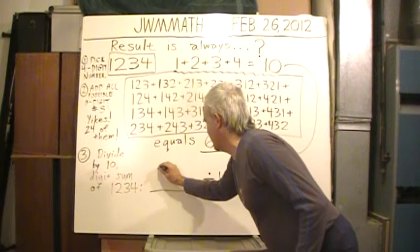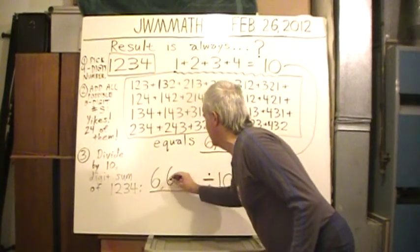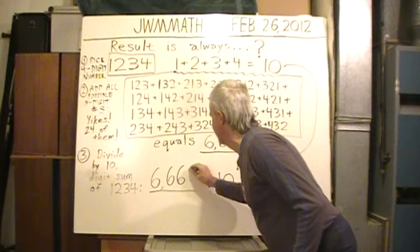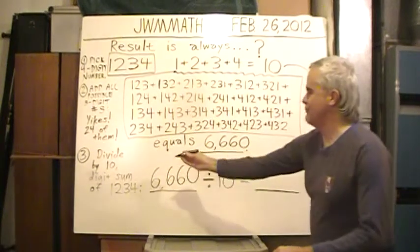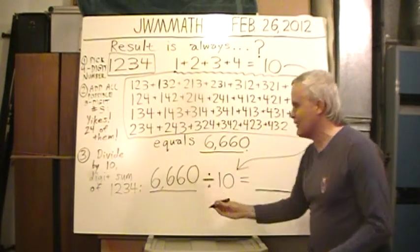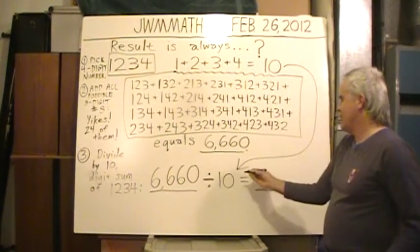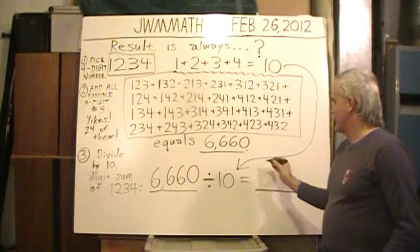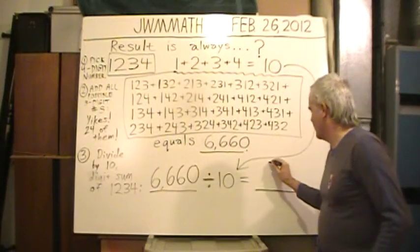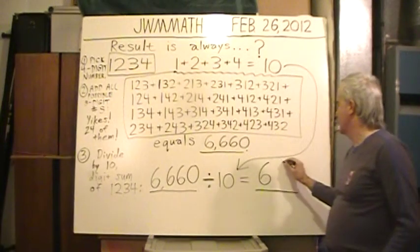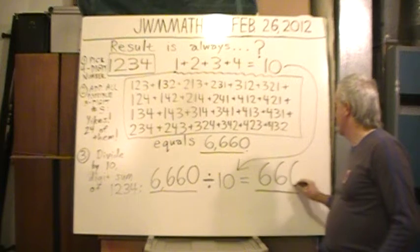So I'm going to take that 6,660 and place it down here for the last step. Divide by 10, that digit sum of that original 1,234. Easy to divide by 10. I have a number ending in a zero. I'm going to drop that last zero. Final answer: 666.